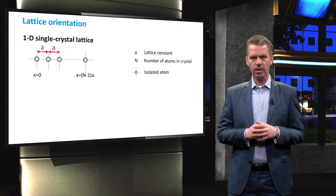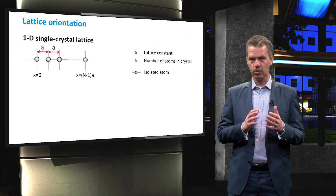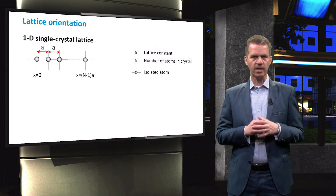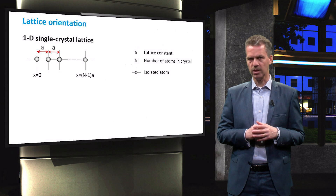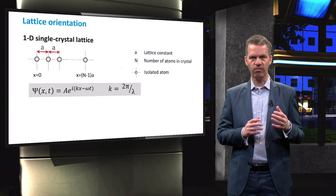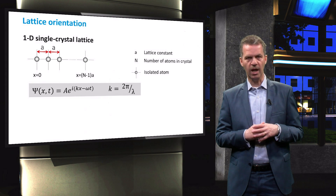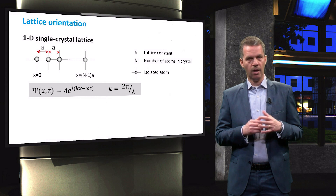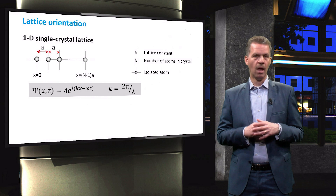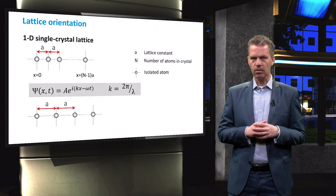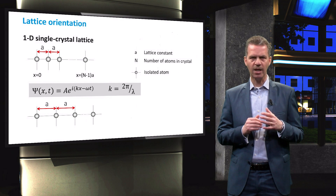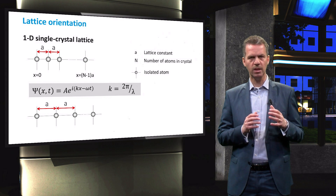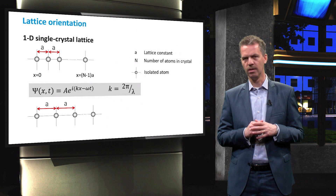The atoms in this one-dimensional lattice form a periodically varying potential. It has been shown in the literature that the solution to the Schrödinger equation for this situation is a wave of the following form, with k the wave factor in units of inverse length. This function is called a Bloch wave. We can clearly see that by increasing the atom spacing, the wave factor of the wave solution cannot be constant, but should decrease as the wavelength needs to increase.